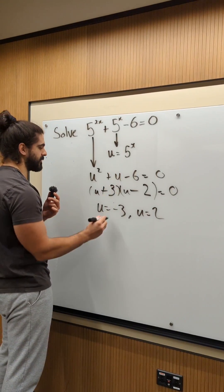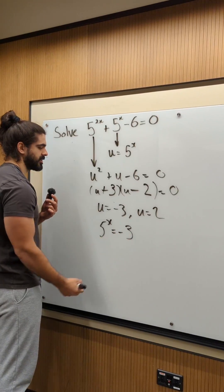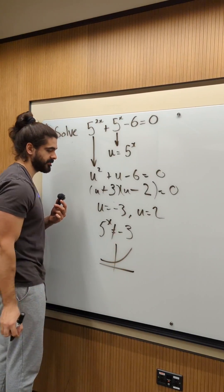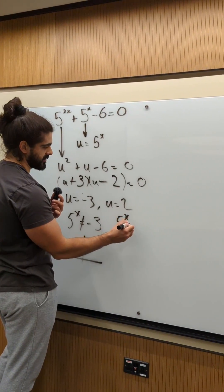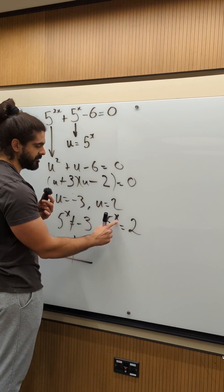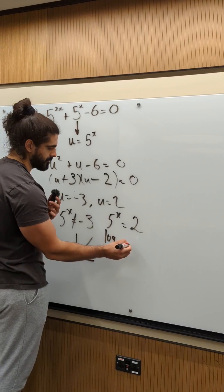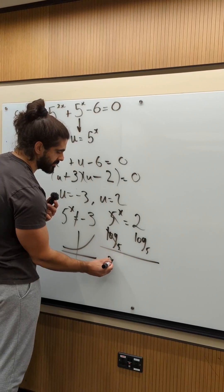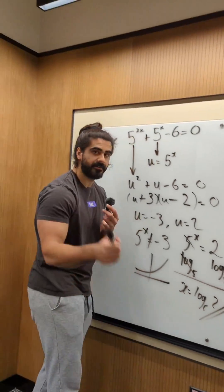Now, remember we had phi to the power of x. You should notice this can never happen — all exponentials are positive, so you can't have a negative number there. So, we have phi to the power of x equals 2. The inverse of 5 to the power of is log base 5. Cancel. x is log base 5 of 2. Nice.